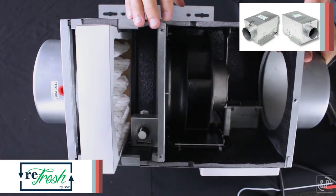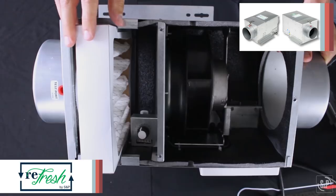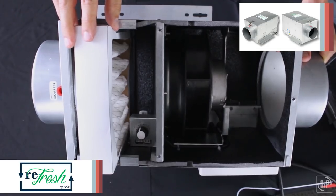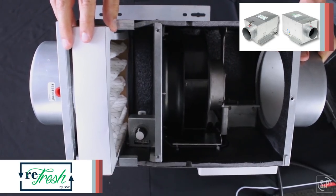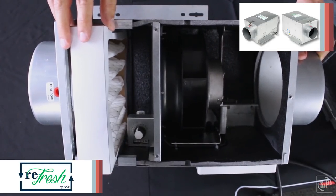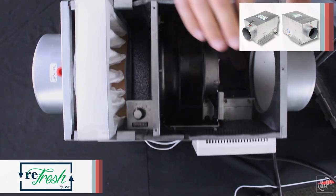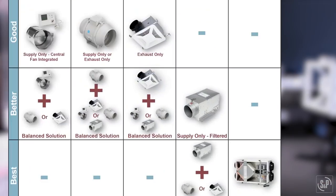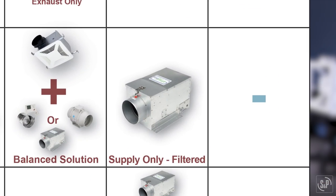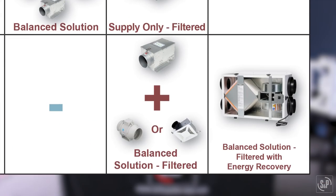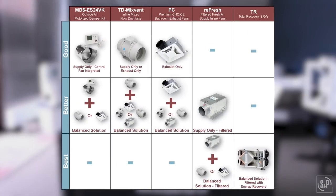We also offer 2-inch thick MERV 8 and MERV 13 filter options to make sure the outside supply air is clean and help improve IAQ. The Refresh Series can be used as a supply only or combo system to provide fresh air.